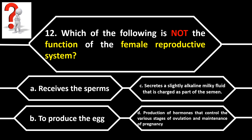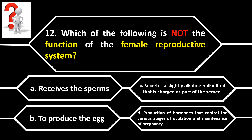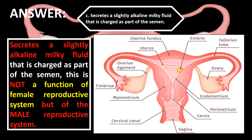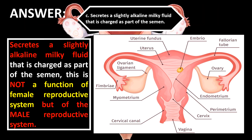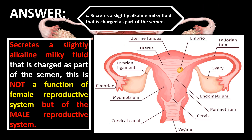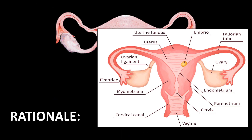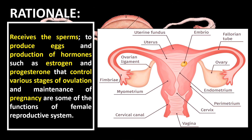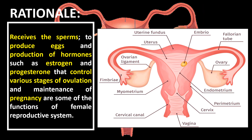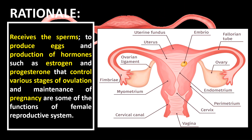Number 12. Which of the following is not a function of the female reproductive system? A. Receives the sperm. B. To produce the egg. C. Secretes a slightly alkaline milky fluid that is charged as part of the semen. D. Production of hormones that control the various stages of ovulation and maintenance of pregnancy. The correct answer is letter C. Secreting a slightly alkaline milky fluid as part of semen is not a function of the female reproductive system, but of the male reproductive system. Receiving sperm, producing eggs, and producing hormones such as estrogen and progesterone to control ovulation and maintain pregnancy are functions of the female reproductive system.